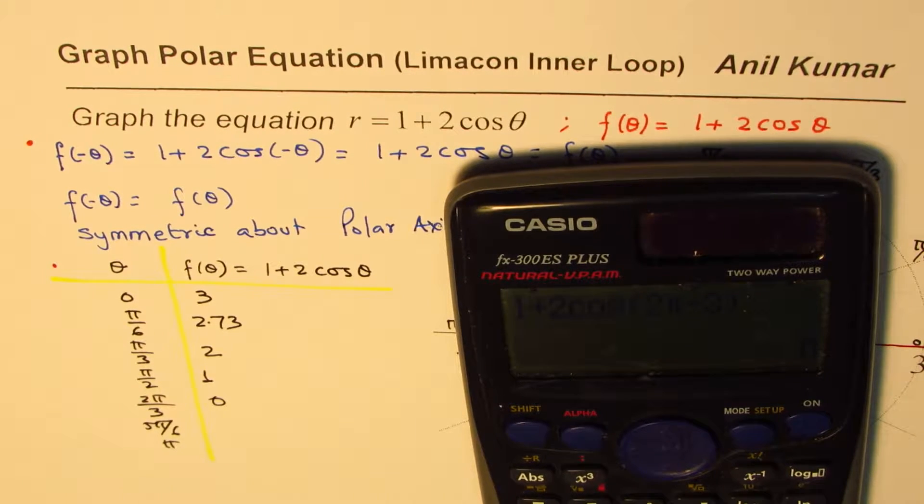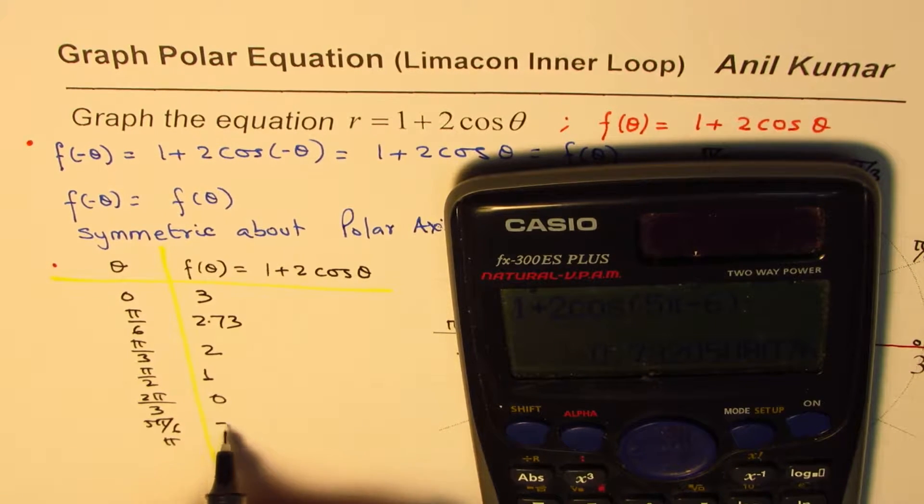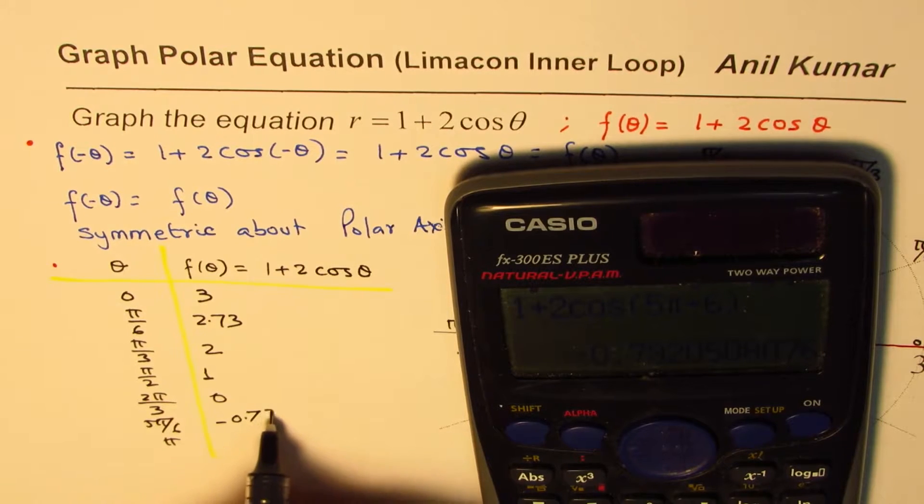And then we have 1 plus 2 times cos of 5 pi by 6. So 5 pi divided by 6 equals, in decimals again, minus 0.73.